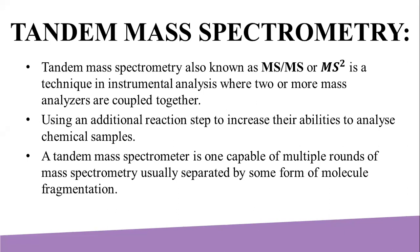For example, one mass analyzer can isolate one peptide from many entering a mass spectrometer. A second mass analyzer then stabilizes the peptide ion while they collide with gas, causing them to fragment by collision-induced dissociation (CID). A third mass analyzer then sorts the fragments produced from the peptide. Tandem mass spectrometry can also be done in a single mass analyzer over time, as in a quadrupole ion trap.